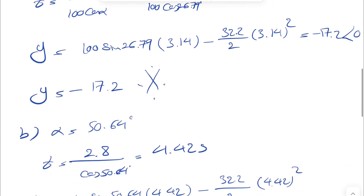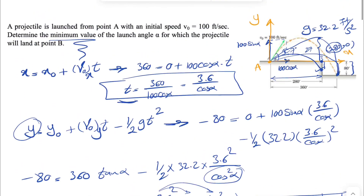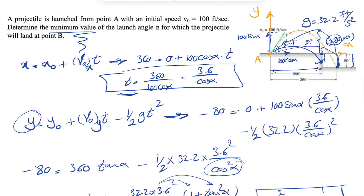So the final answer is alpha equals 50.64 degrees. One note: the question asks for the minimum value of alpha, which is a bit unclear since both angles were constrained by the geometry. If anyone has thoughts on why the problem specifically uses the term 'minimum,' feel free to drop it in the comments so everyone can benefit. That's the final answer — hope everything was clear, take care, and I'll see you in the next video.